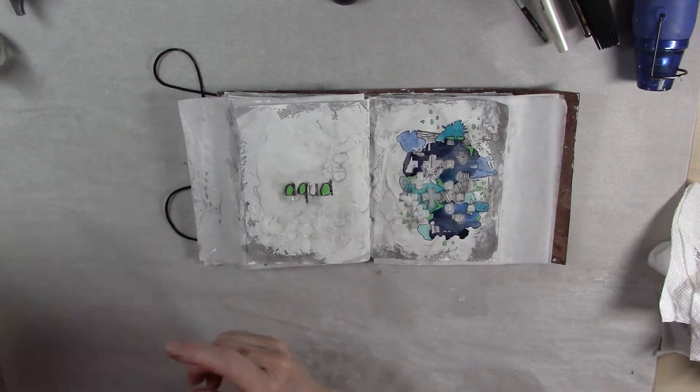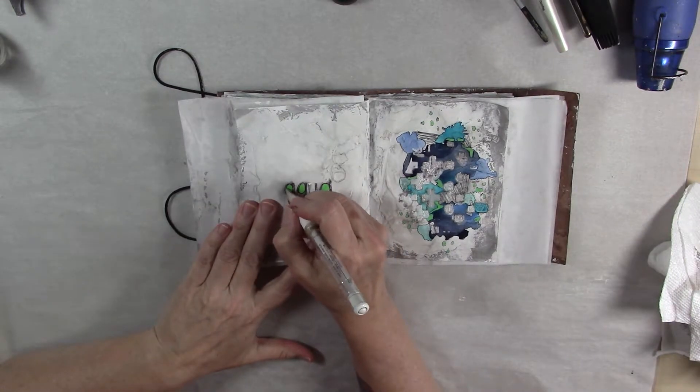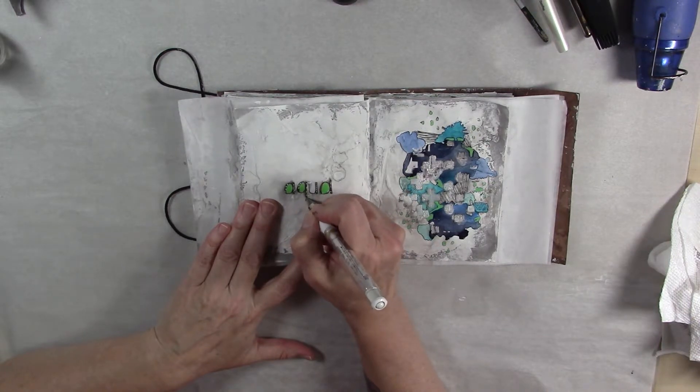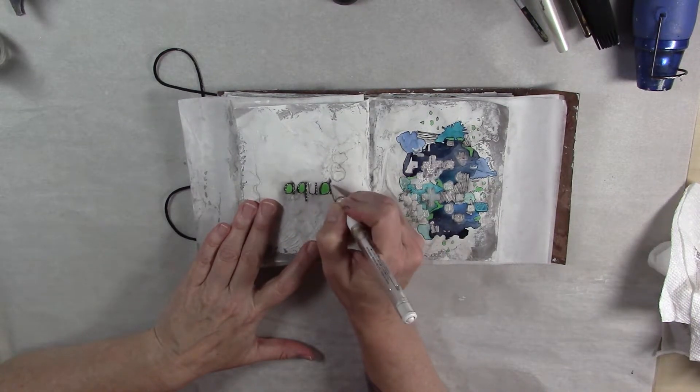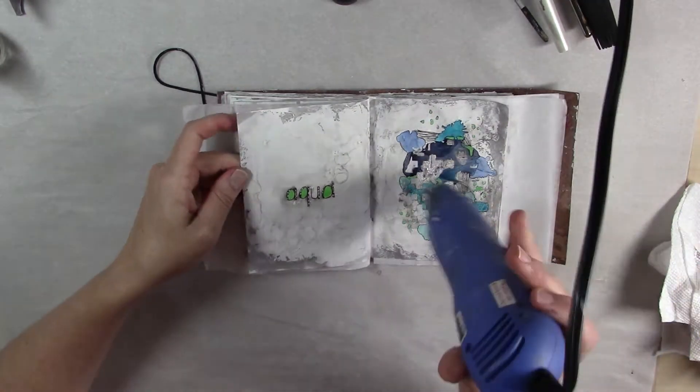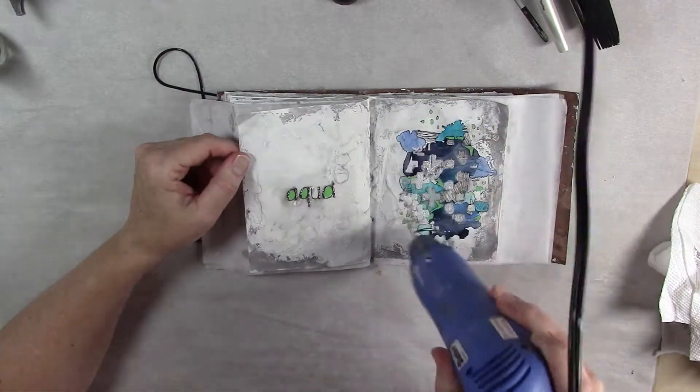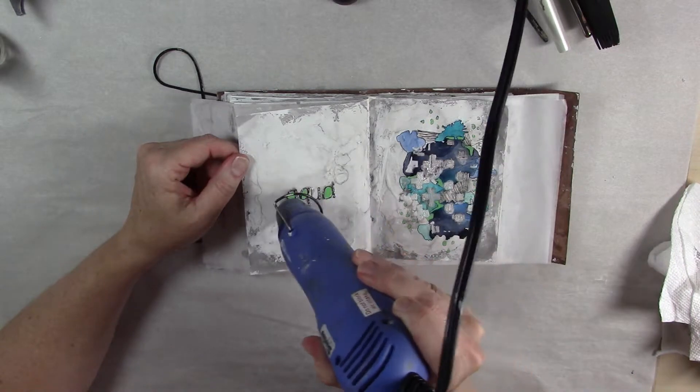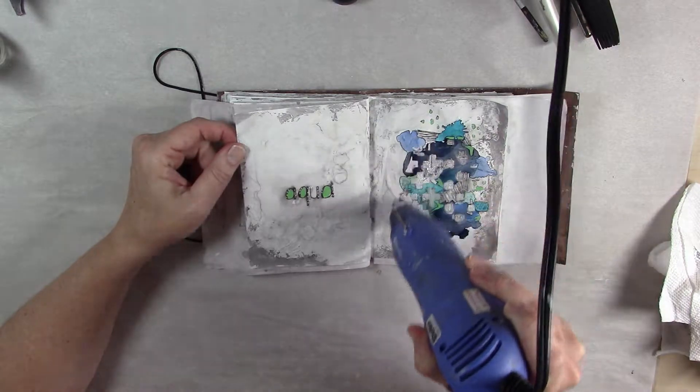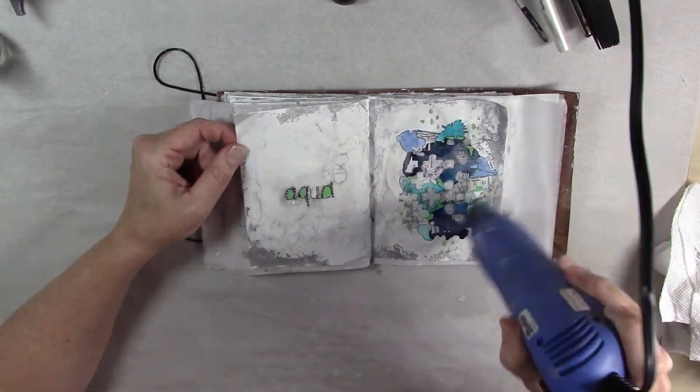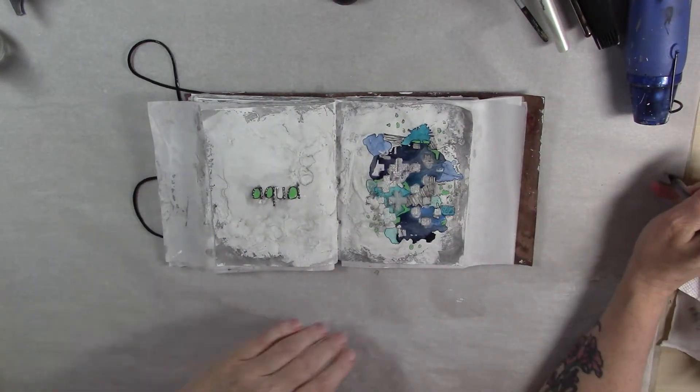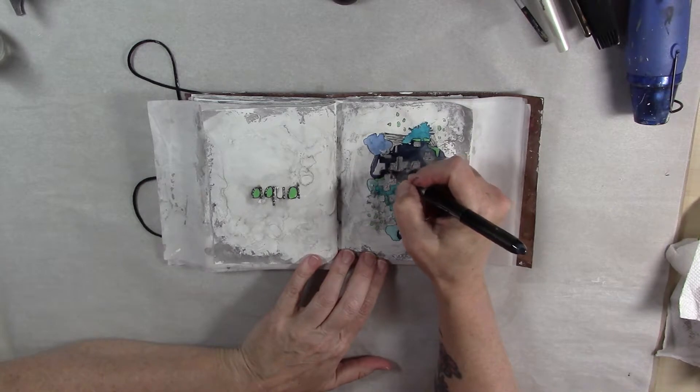And then I also on the letters, just again for a little bit of highlights, I just took my white pen and just marked on the outside of these letters. I'm going to go ahead and make sure this is all dry. And then I'm going to go ahead and outline these marks one more time, just to give them a little bit more definition.